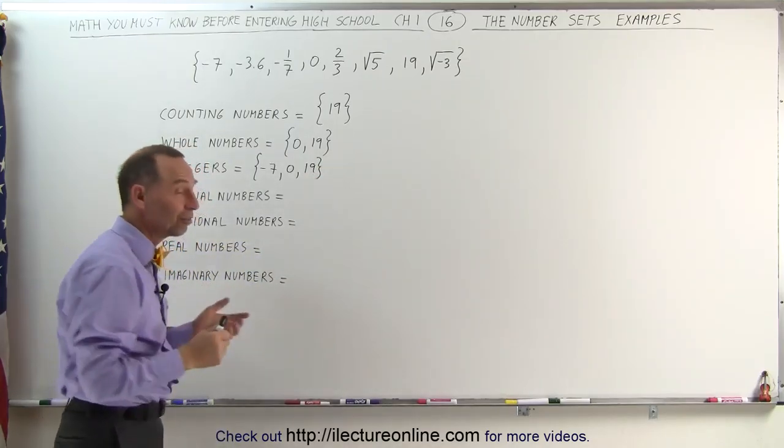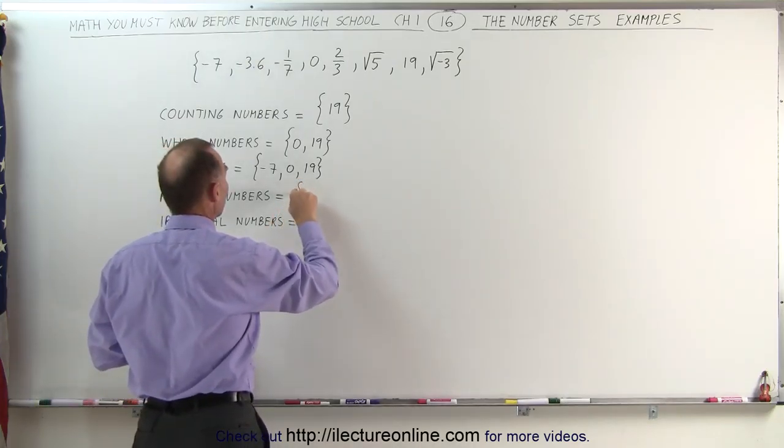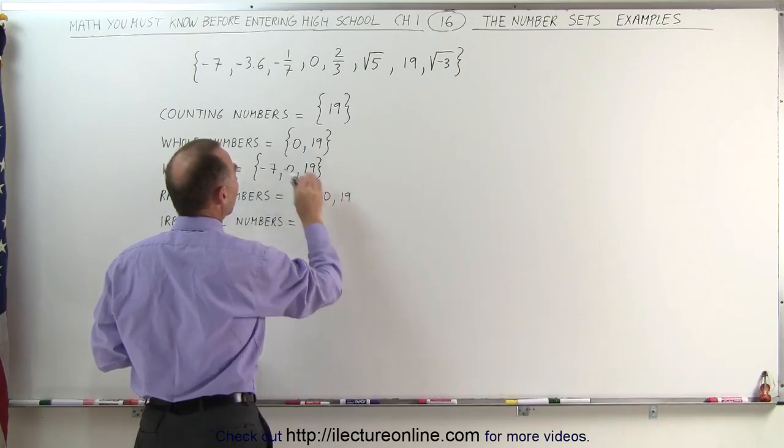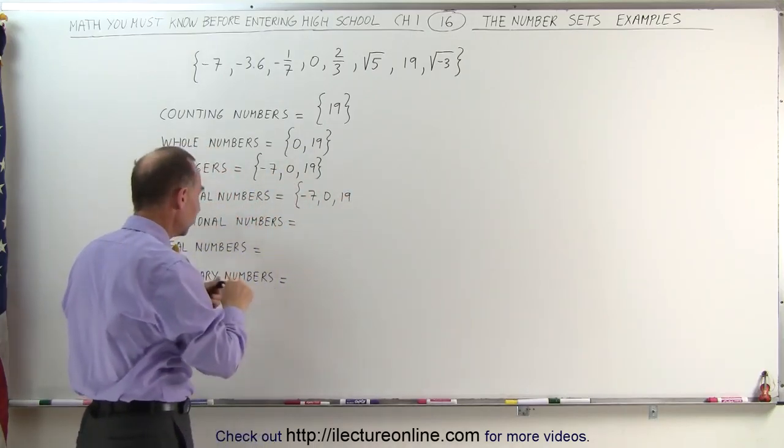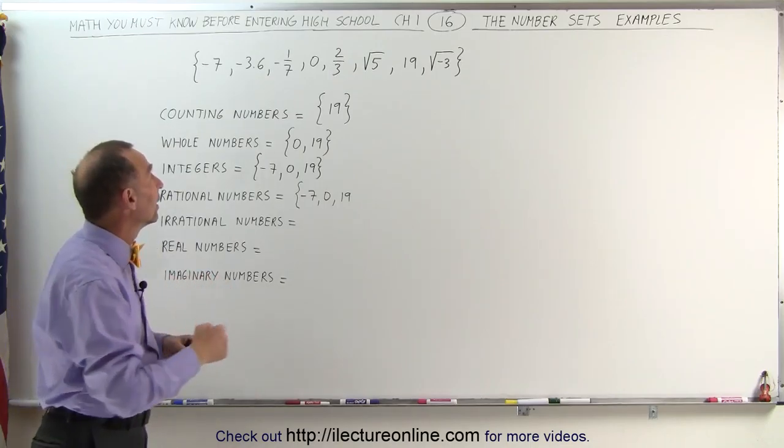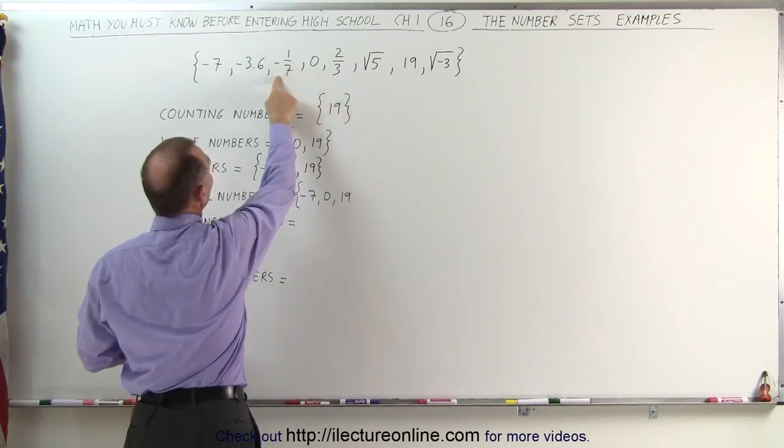Rational numbers. Well, rational numbers are all the integers. So let's start with all the integers: negative 7, 0, and 19. So all integers are also rational numbers, but they're also the numbers that can be put in the form A over B. Decimals like this which are terminating, and fractions, even with negative signs,